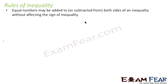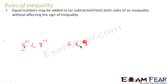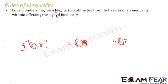The first rule of inequalities: equal numbers may be added or subtracted from both sides without affecting the sign of inequality. For example, 5 is less than 8. If we add 1 to both sides, we get 6 is less than 9 — the sign does not change. If we subtract 1 from both sides, we get 4 is less than 7 — the sign still does not change.